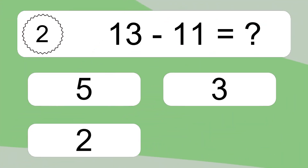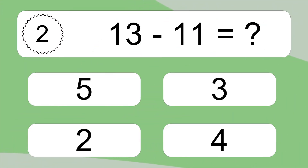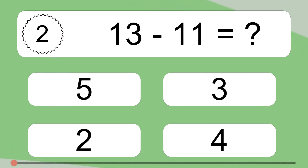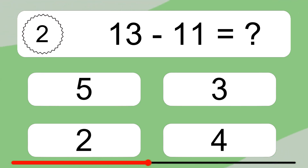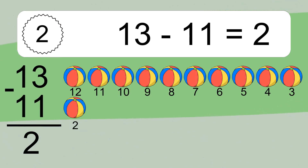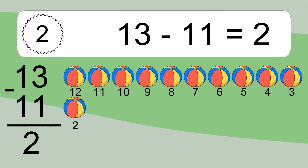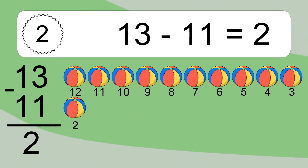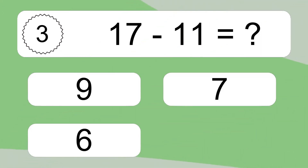13 minus 11 equals what? 13 minus 11 equals 2. Let's count it: 12, 11, 10, 9, 8, 7, 6, 5, 4, 3, 2.